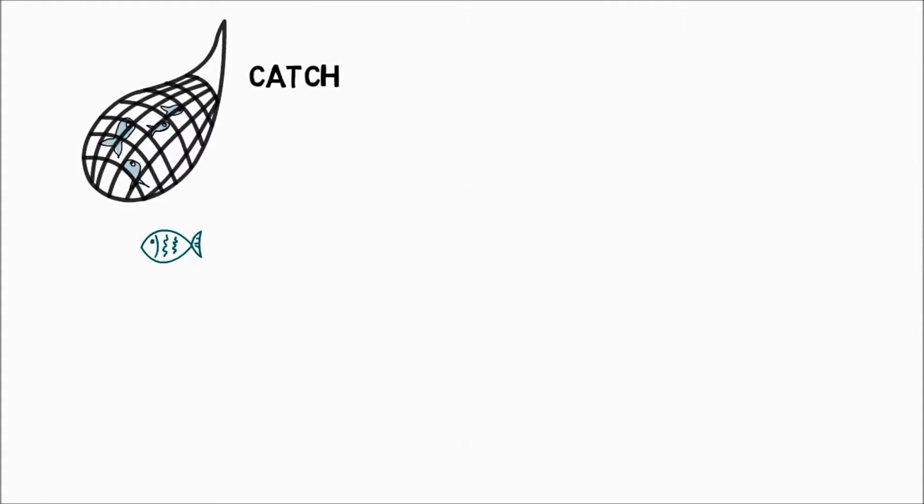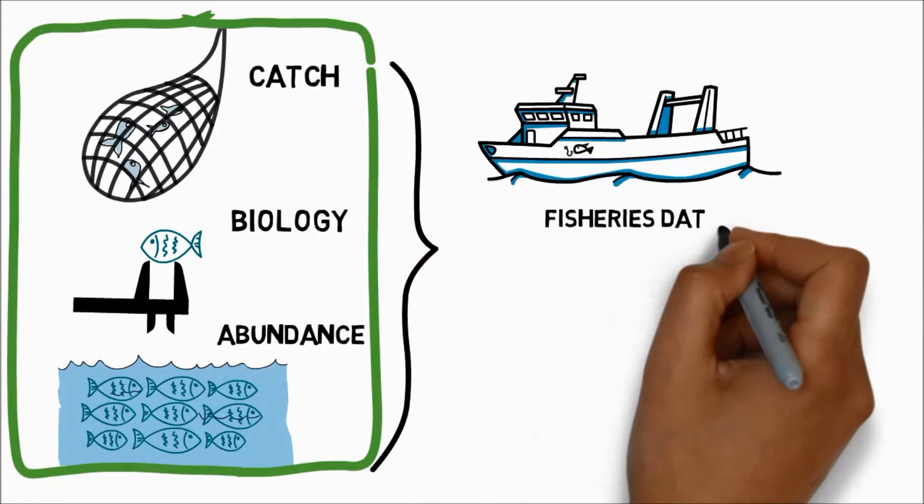Observations of catch, fish biology, and fish numbers are gathered for stocks directly from the fishing industry and by scientific research vessels, which can then be used to show how fish stocks have changed over time.